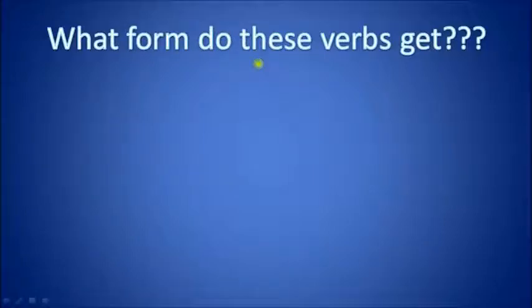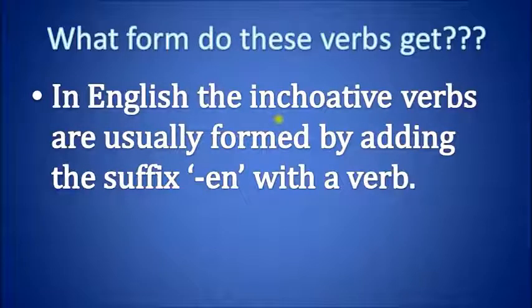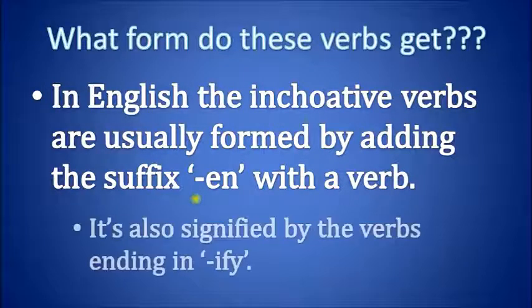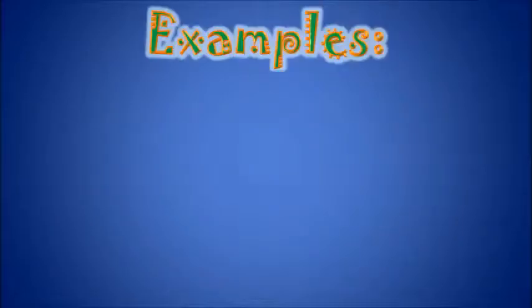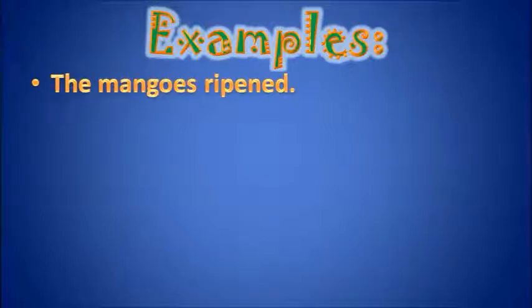What form do these verbs take in English? Incoative verbs are usually formed by adding the suffix '-en' to a verb. They are also signified by verbs ending in '-ify'. So the two main patterns to watch for are the '-en' ending and the '-ify' ending.